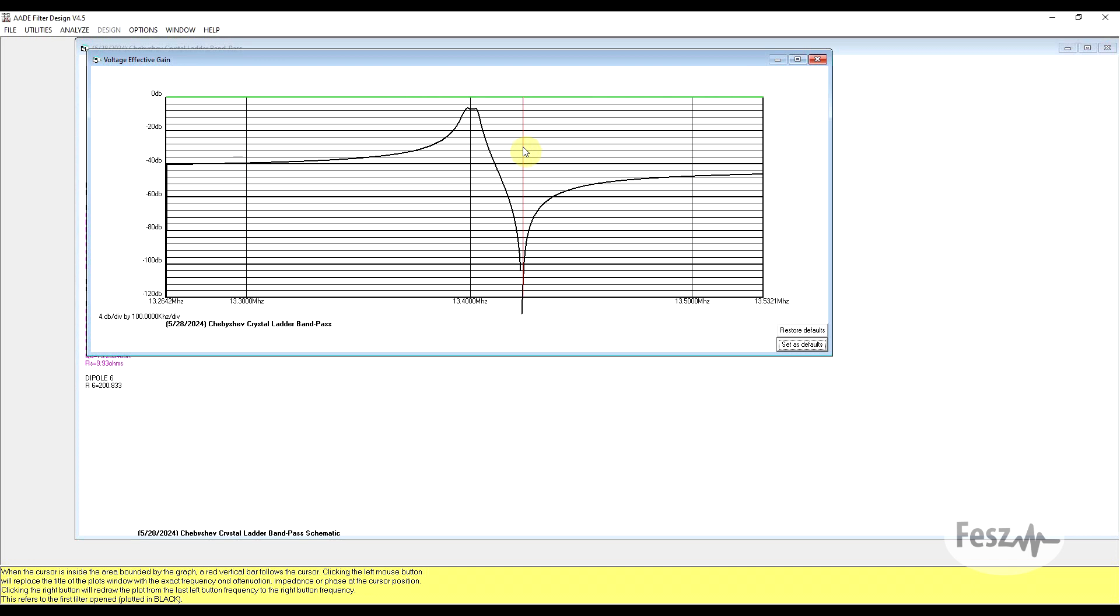If we view the voltage effective gain and we just leave the default frequencies and amplitudes, we get the response graph of our filter, so at least the expected response. In all fairness, this is not the most user-friendly tool, but it does offer features specifically related to crystal filters which I personally was not able to find anywhere else. So if you're trying to design a crystal ladder filter, this tool can be quite invaluable.